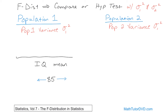What we do is sample n sub one people from population one and n sub two people from population two. We can't afford or physically give the test to a million people. From this sample data we calculate a sample mean, which is different from the population mean. But we're really talking about variance here — that's what the F distribution covers — so we care about the sample variance, not the mean.